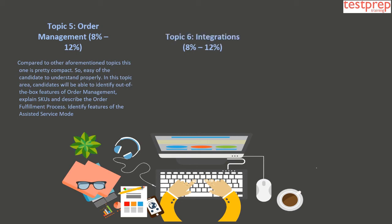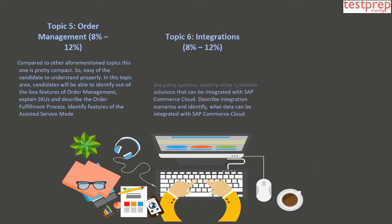Topic 6: Integrations, which comprises 8–12% weightage in the exam. This topic area allows candidates to prepare a successful integration of SAP E-Commerce Cloud with third-party systems, identify other C4HANA solutions that can be integrated with SAP Commerce Cloud, describe integration scenarios, and identify what data can be integrated with SAP Commerce Cloud.